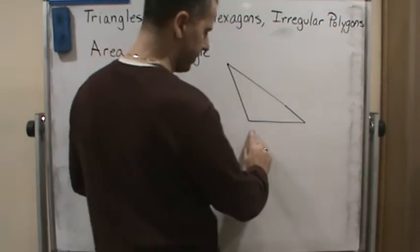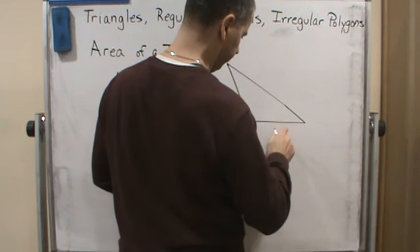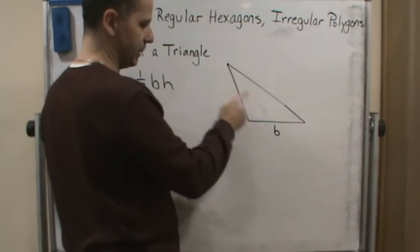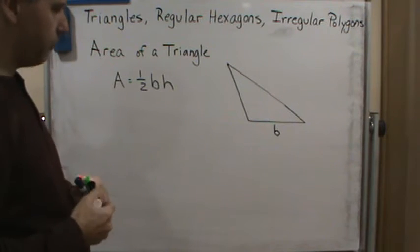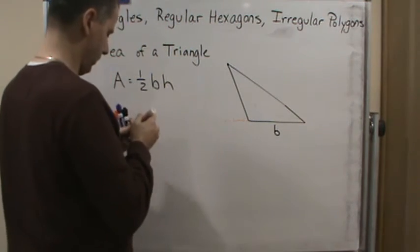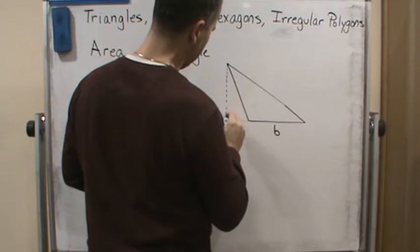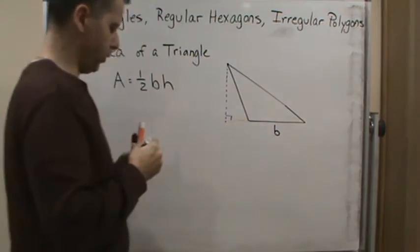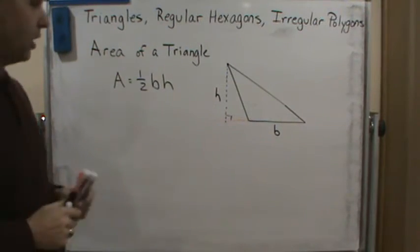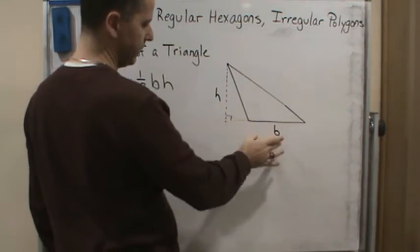For example, if this is going to be the base, let's say this is the base here. Then we would need to draw a perpendicular line from the vertex opposite the base to the base. In this situation, we would have to extend the base. We would have to extend it out this way, and then we would draw a perpendicular line down to the base. And so this perpendicular here would be the height. This is also called the altitude of the triangle. So the height would be this, and this would be the base.